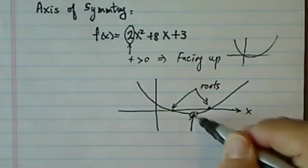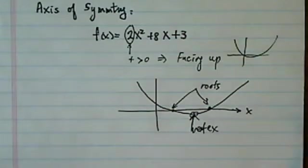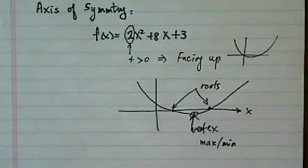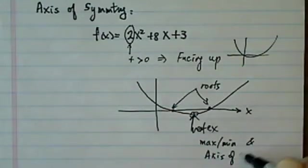And the important part here, the vertex. The vertex is important because it gives you the maximum or minimum value for the function, and gives us what we're looking for, axis of symmetry.